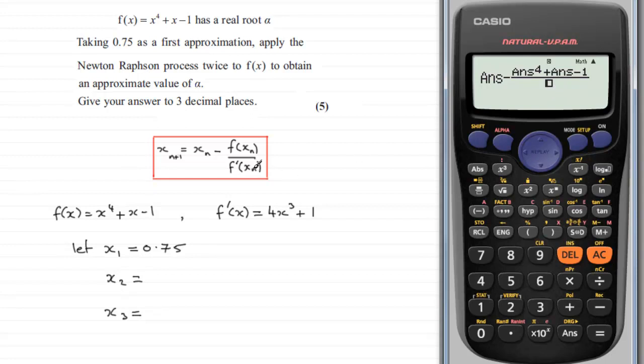So just use the cursor movement there and we've just got to enter the first differential of f of x which is this one, 4 answer cubed plus 1. So 4 times the answer cubed and then plus the 1.